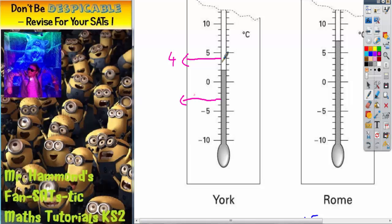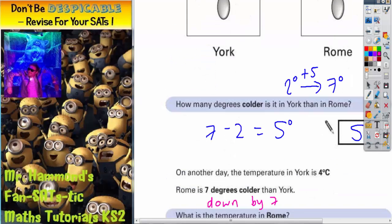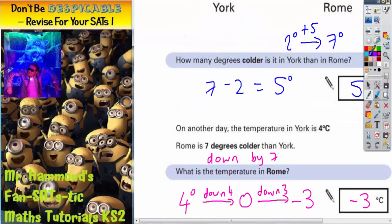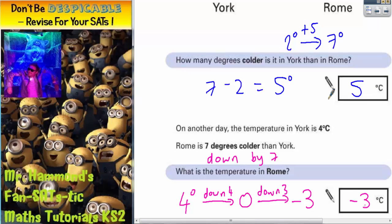And all we need to do then is read it off. Well, there's 0. So 1 degree below will be minus 1. Then minus 2. Then minus 3 degrees. So we've still got the same answer, but we've used the picture to help us. So there's your two answers. First one is 5 degrees. Second one is minus 3 degrees.